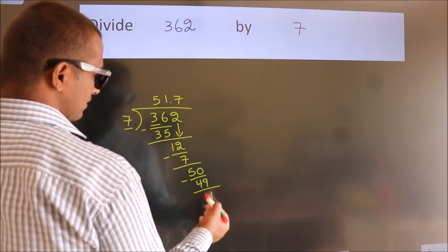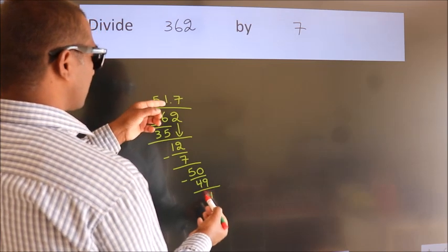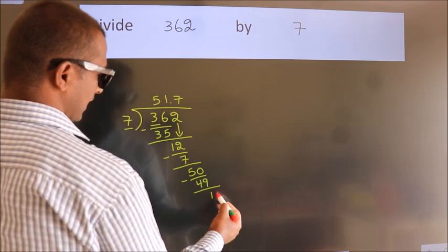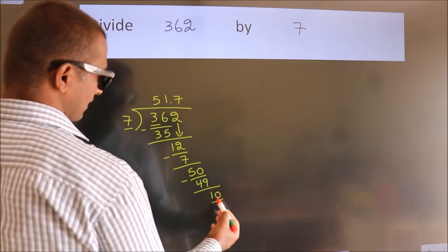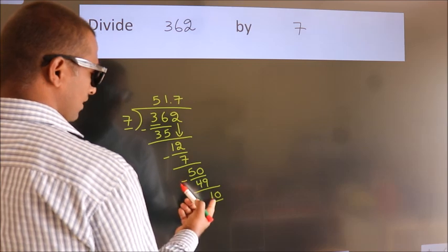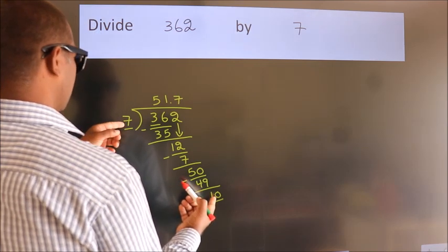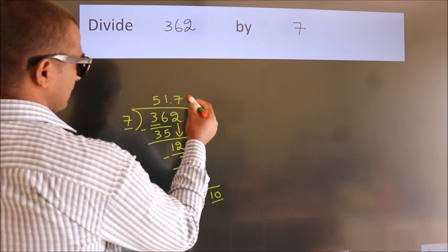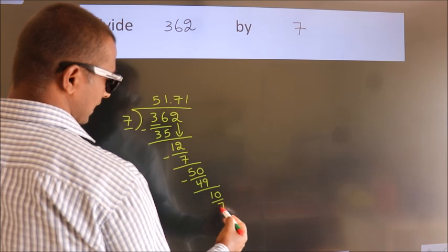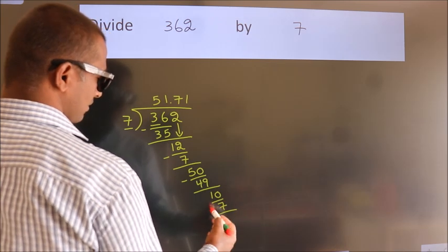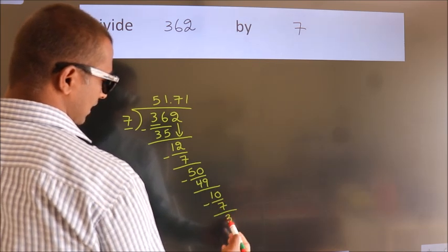After this we already have the decimal, so we directly take 0, giving us 10. A number close to 10 in the 7 table is 7 ones 7. Now we subtract and we get 3.